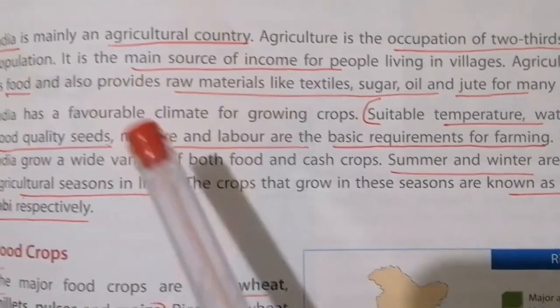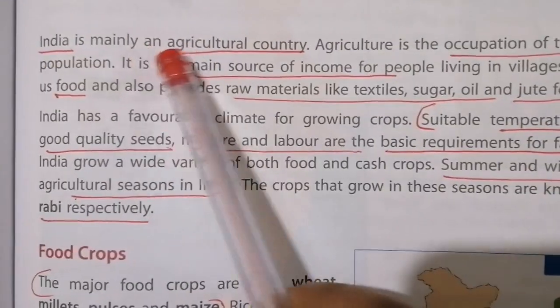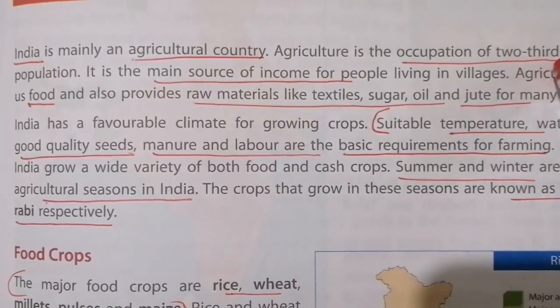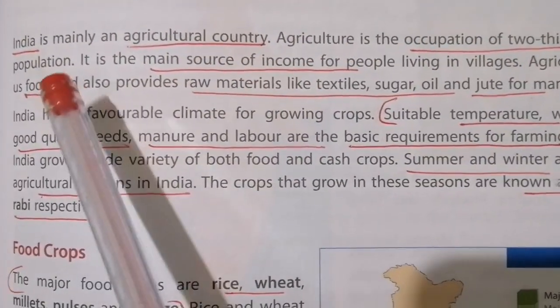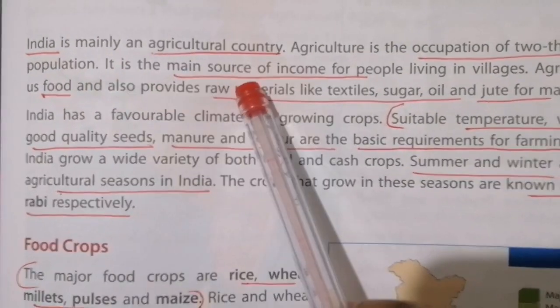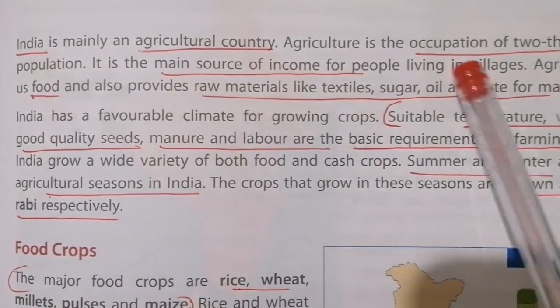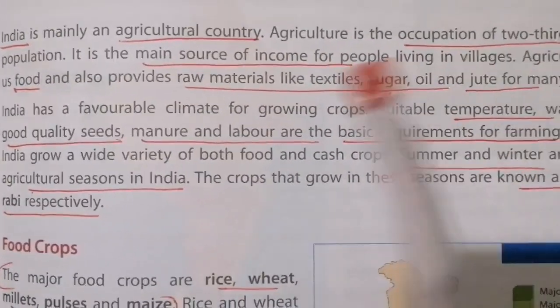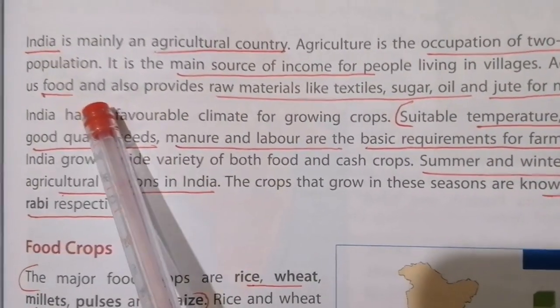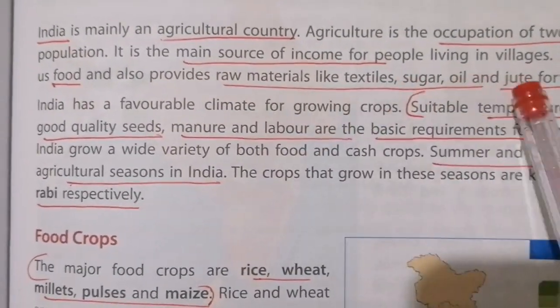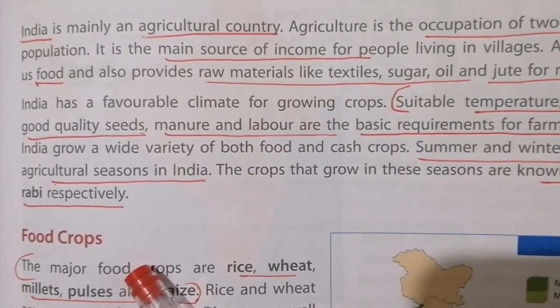The raw materials are for textile, sugar, oil, and jute for many industries. So agriculture is the main occupation — two-thirds of the population is in agriculture. It is the main source of income for villages, and it gives us food and raw materials for industries.